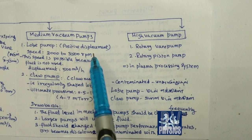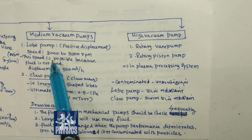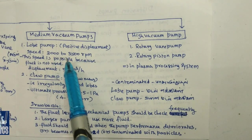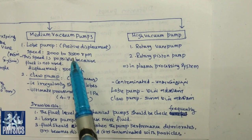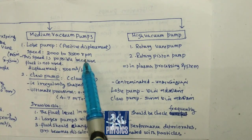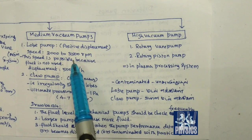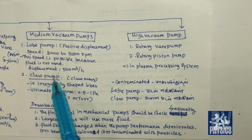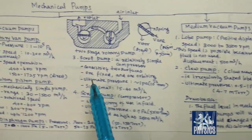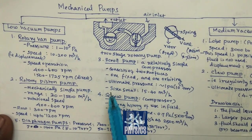This is a positive displacement type. The speed range is up to 3500 RPM. You can see that if you increase the speed of the pump, the rotor will rotate faster.